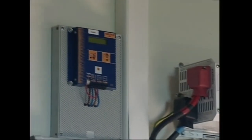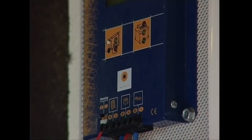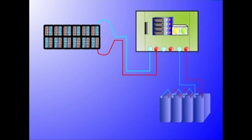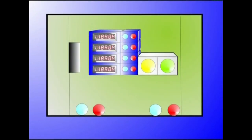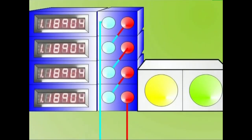Karga erreguladoreak panelean lortutako korronte elektrikoa metagailuen egoerara egokitu, eta metagailuentzat kaltegarriak izan daitezkeen deskarga eta gain-kargak eragozten ditu. Horretarako, metagailuen borneen arteko tentsioa neurtzen du. Erreguladoreak serian konektatuta egon daitezke edo paraleloan.